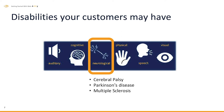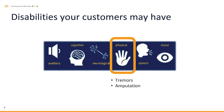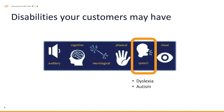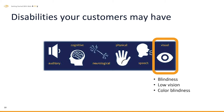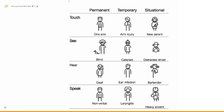There are also physical disabilities — this could be tremors, amputation, speech difficulties. It could include dyslexia, autism, and others. And also visual disabilities — blindness, low vision, colorblindness. What's interesting is that with all these different disabilities, you can break them down into whether they're permanent, temporary, or situational.